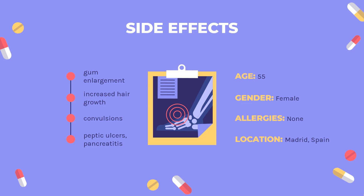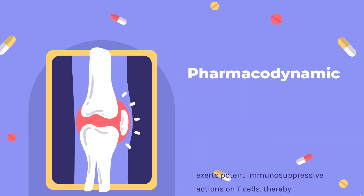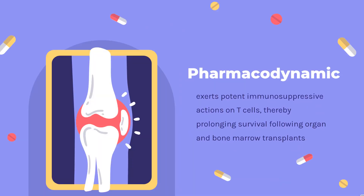Cyclosporine causes hypertension by inducing vasoconstriction in the kidneys and increasing sodium reabsorption. Pharmacodynamically, cyclosporine exerts potent immunosuppressive actions on T-cells, thereby prolonging survival following organ and bone marrow transplants. This drug prevents and controls serious immune-mediated reactions, including allograft rejection, graft-versus-host disease, and inflammatory autoimmune disease. Notable effects include hypertrichosis, gingival hyperplasia, and hyperlipidemia. There is also some debate about this drug causing nephrotoxicity.